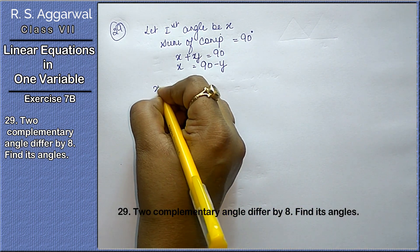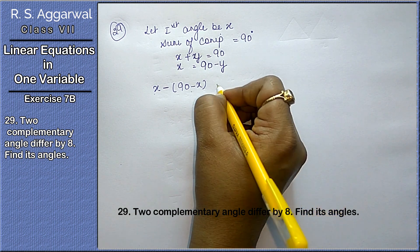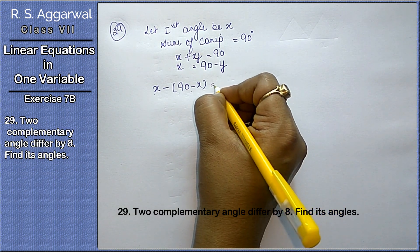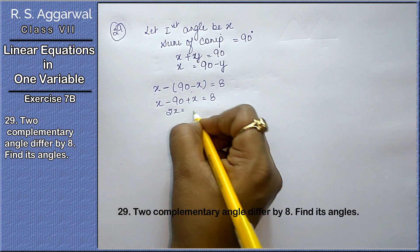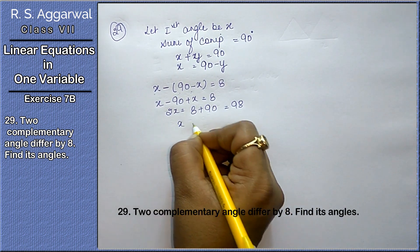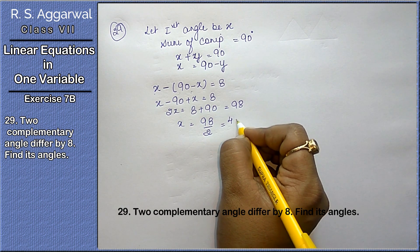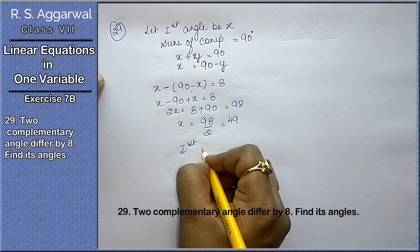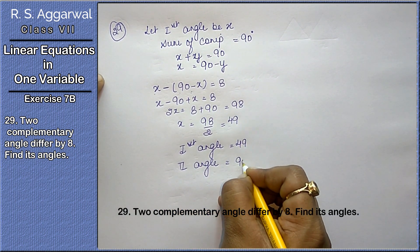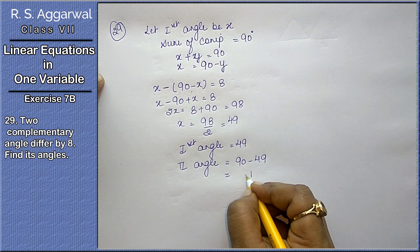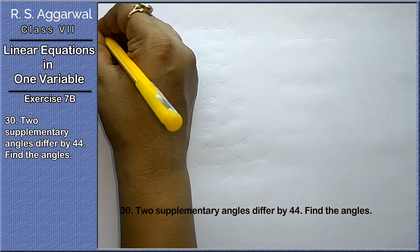In this case, if there are two angles differ means minus. First angle x, then the other is 90 minus x for complementary. If it is supplementary, then 180 minus x. It differs by 8, that means x minus 90 plus x equals to 8. Now 2x equals to 8 plus 90 equals to 98. x equals to 98 upon 2, that is 49.